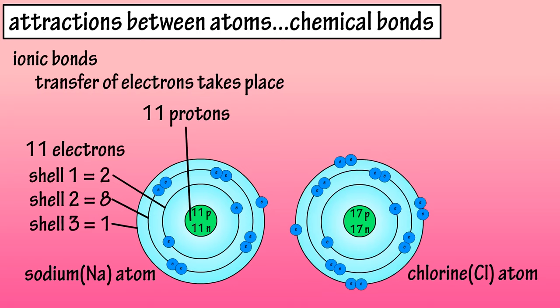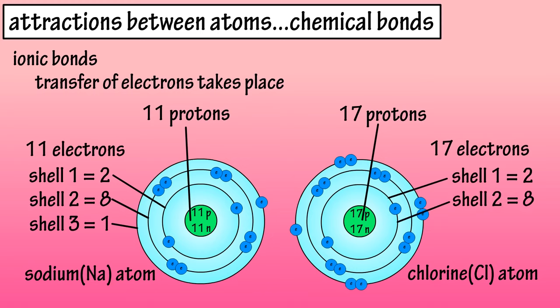And here we have a chlorine atom, which has an atomic number of 17. So, 17 protons and 17 electrons. It has 2 electrons in shell 1, 8 in shell 2, and 7 in shell 3.